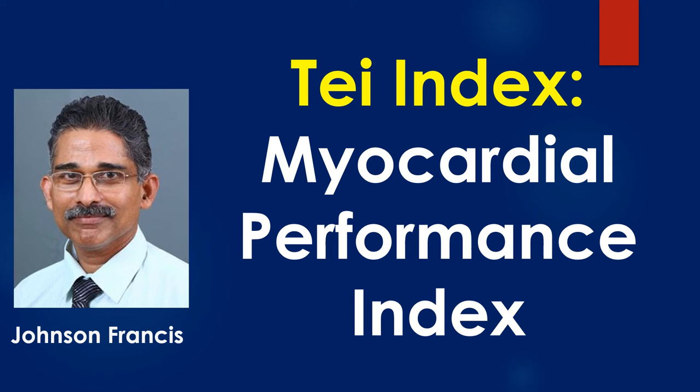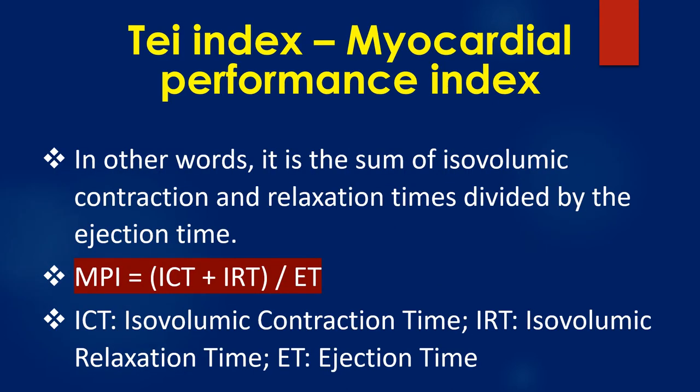Tei index, or myocardial performance index, is the ratio of the time spent in isovolumetric activity divided by the time spent in ventricular ejection. In other words, it is the sum of isovolumic contraction and relaxation times divided by the ejection time. MPI = (ICT + IRT) / ET, where ICT is isovolumic contraction time, IRT is isovolumic relaxation time, and ET is ejection time.